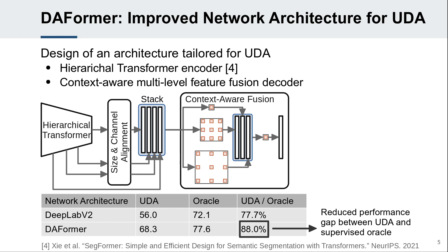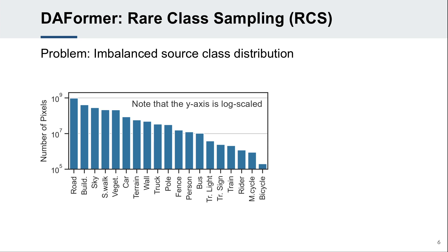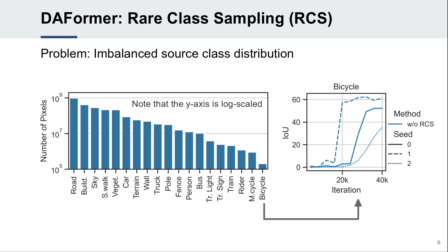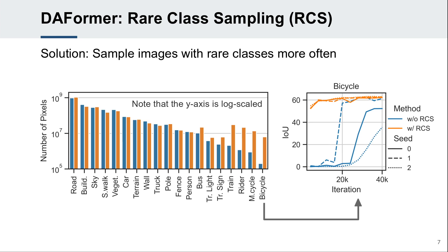One challenge of training a more capable architecture for UDA is overfitting to the source domain. To circumvent this issue, we introduce strategies to stabilize and regularize the UDA training. In many cases, the source dataset is imbalanced and some rare classes appear only in a few images. Therefore, the performance of rare classes heavily depends on the random seed of the data sampling. By frequently sampling images with rare classes, the network can learn them more stably, which improves the quality of pseudolabels and reduces the confirmation bias.